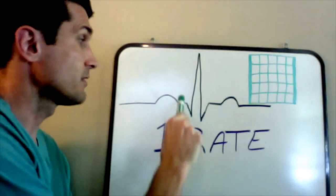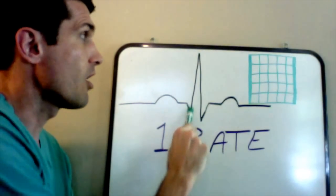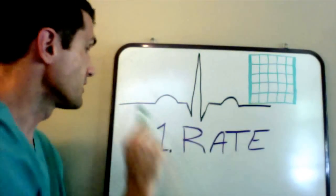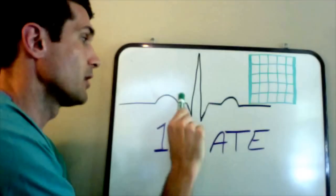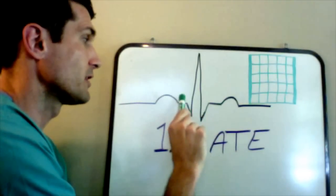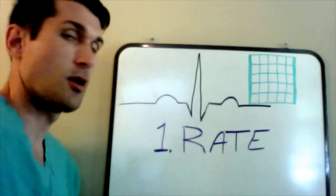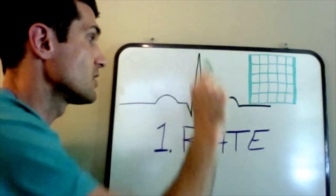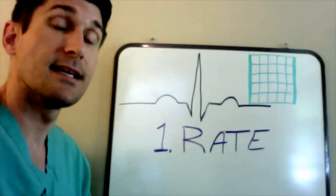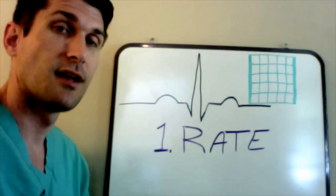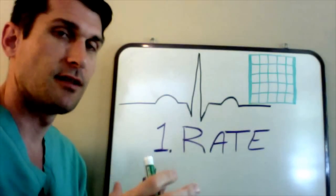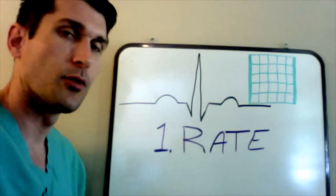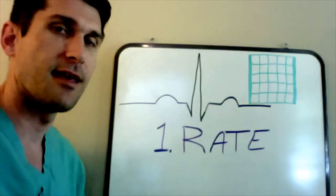Next you're going to have a QRS. The Q is a downward deflection, the R is an upward deflection, and the S is another downward deflection. This is called the isoelectric line, so the Q and S are both negative and the R is positive. Taken as a whole, this is the QRS — the depolarization of the ventricles, aka contraction. The electrical signal is creating a contraction of the ventricles to eject blood through the pulmonary artery and the aorta.